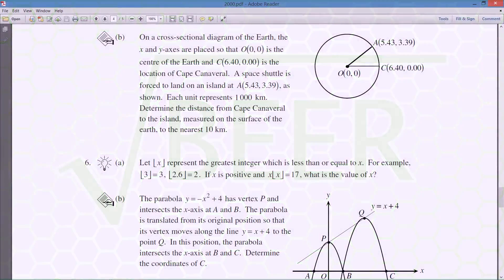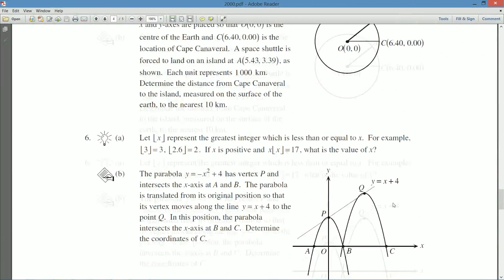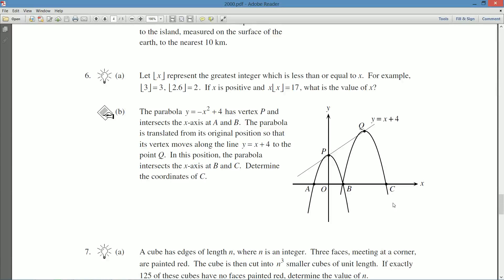We just did question 5 in the previous video, and now we're up to question 6. Specifically, we're at question 6a, which says, let the symbol we call the floor function. Let the floor function of x represent the greatest integer which is less than or equal to x.